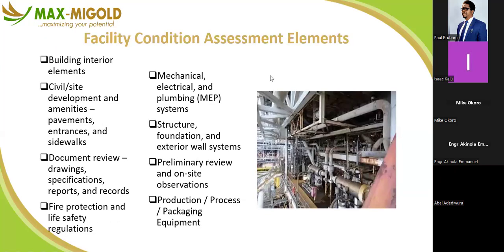What are the elements you assess in a condition assessment? The building interior — suspended ceilings, POP, pendant lights, plumbing network, furniture fittings, floor tiles, air conditioning. Then site and civil development amenities such as pavement, entrance, transportation system, walkways, staircases, and lifts. Also document review — your as-built drawings.